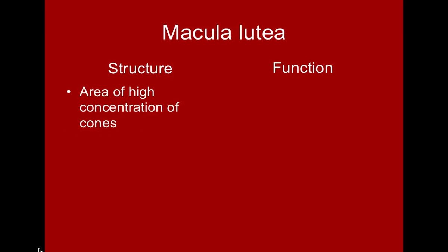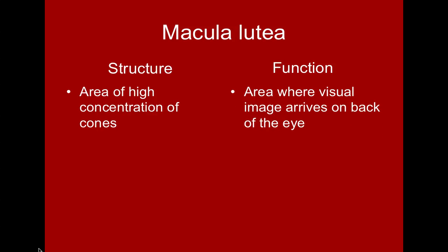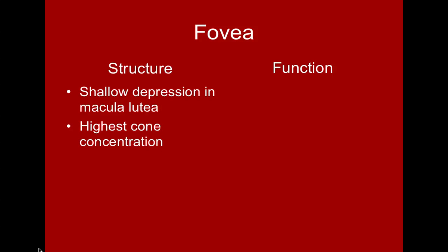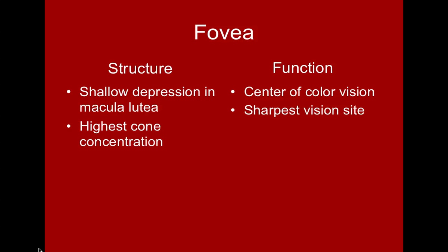The macula lutea — literally meaning 'yellow circle' — is an area with a very high concentration of photoreceptors called cones. This is where the visual image arrives at the back of our eyes. The fovea is a shallow depression within the macula lutea with the highest cone concentration. It is the center for our color vision and provides our sharpest possible vision when we focus our visual image there.